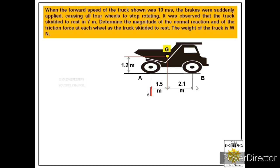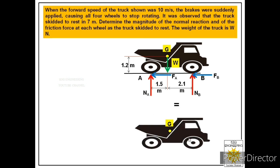To solve this problem, we need to draw a free body diagram. We label reaction NA at both the rear wheels and reaction NB at both the front wheels. The weight of the truck acts downward at point G, which is the center of gravity. We then label friction forces: FA acting at both rear wheels and FB acting at both front wheels.